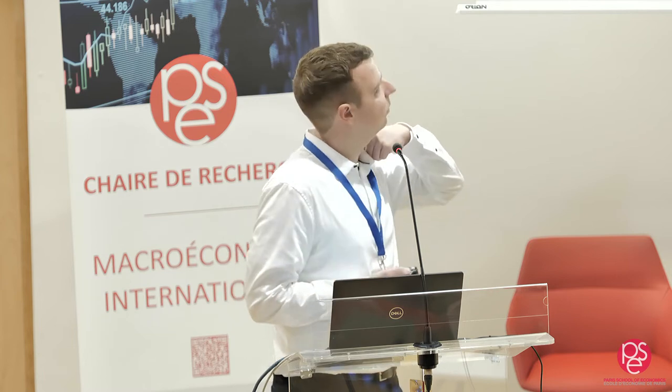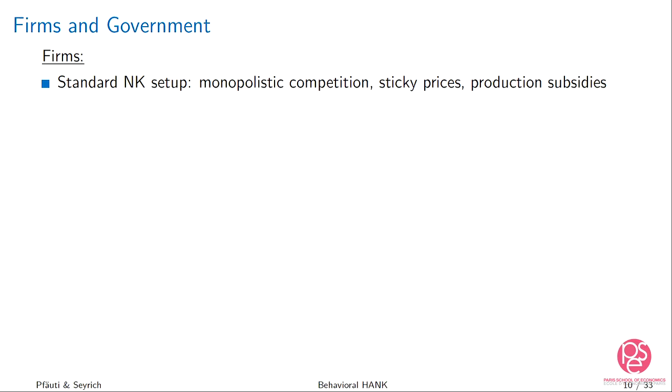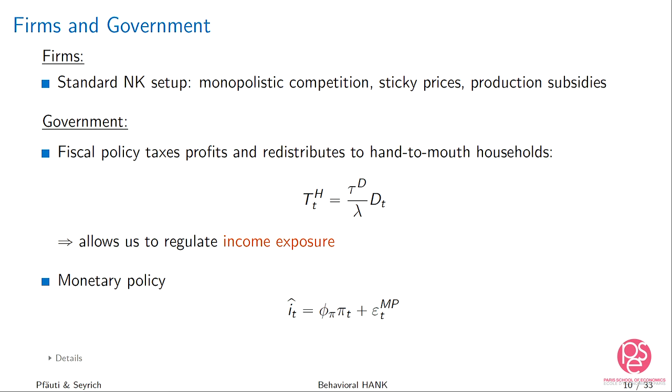The rest of the model is quite standard: a New Keynesian firm side with monopolistic competition and sticky prices. The government has lump-sum transfers and taxes dividends, redistributing to hand-to-mouth households. This is not crucial for the results qualitatively, but it allows us to regulate how exposed different households are to aggregate fluctuations. Monetary policy follows a simple Taylor rule, and monetary policy shocks are the only source of aggregate risk for now.